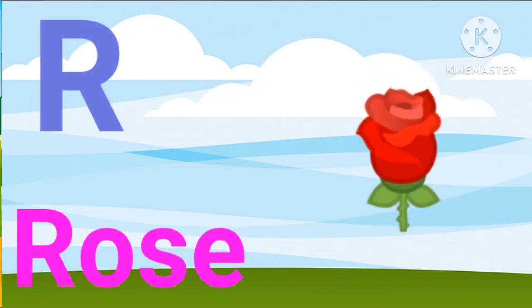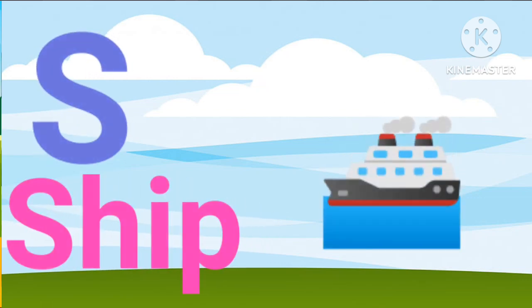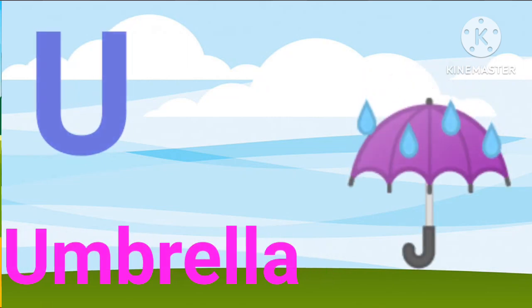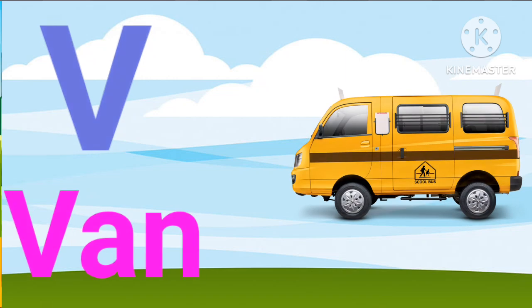R for rose, S for sheep, T for tree, U for umbrella, V for van.